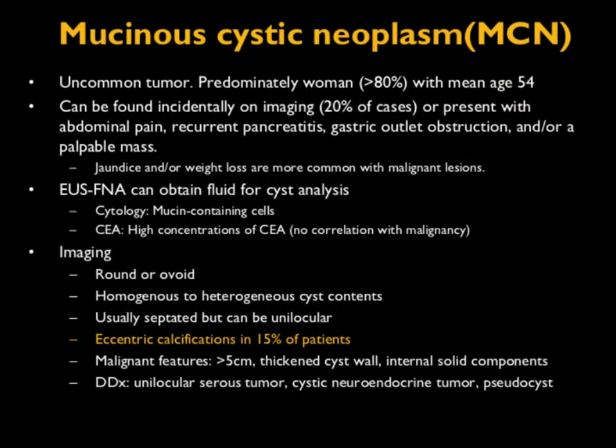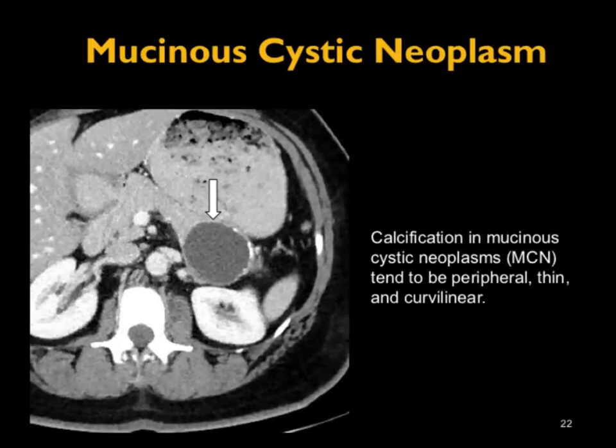Another tumor to mention is MCN — mucinous cystic neoplasm. These are classic: SPEN occurs in younger females; MCNs occur in middle-aged females, average age 54. Typically a cystic lesion in the tail or body-tail junction, usually an incidental finding. These lesions often have peripheral calcification. MCNs are challenging because a small percent can become malignant, related to lesion size and nodular components. Here's a good example — peripheral calcification in the tail.